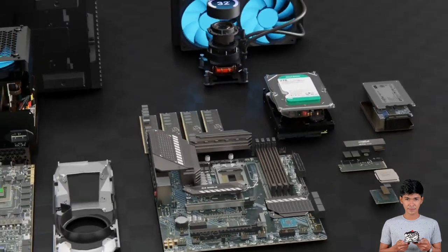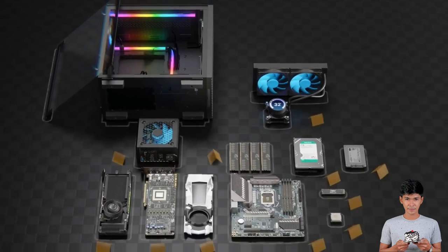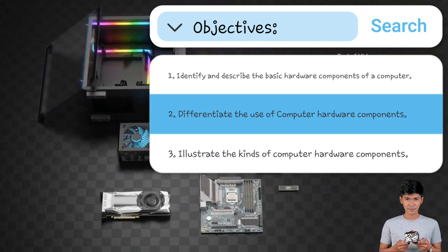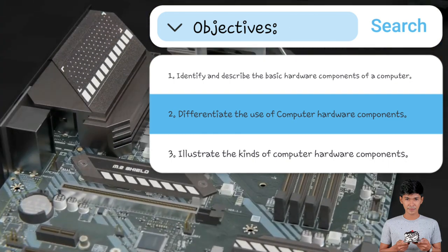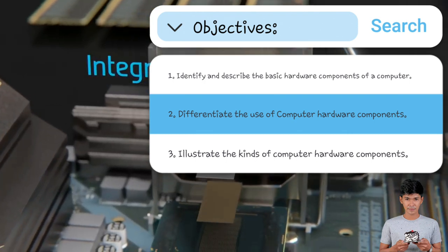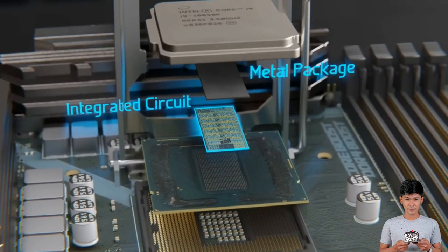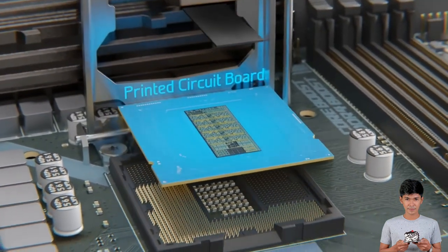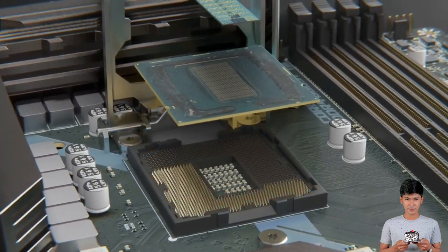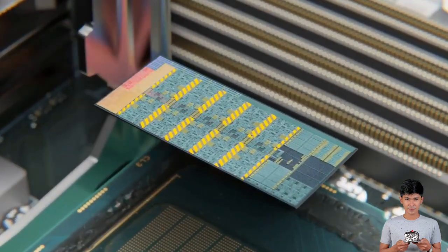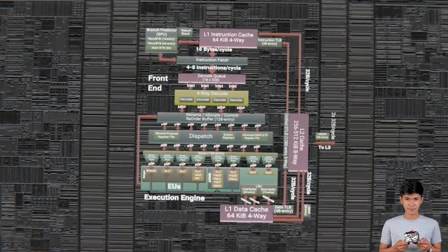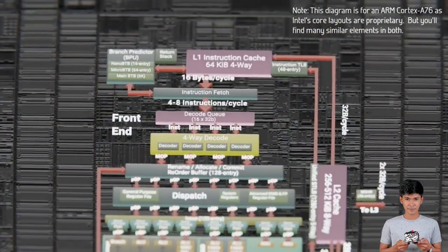Now, let's take a moment to go over the objectives for today's lesson. By the end of the lesson, students are expected to identify and describe the basic hardware components of a computer. Throughout our session, we will engage in interactive discussions, hands-on activities, and visual aids to enhance your learning experience and make the concepts come alive. Questions and active participation are highly encouraged. Let's embrace the opportunity to learn together, share knowledge, and cultivate our passion for technology.